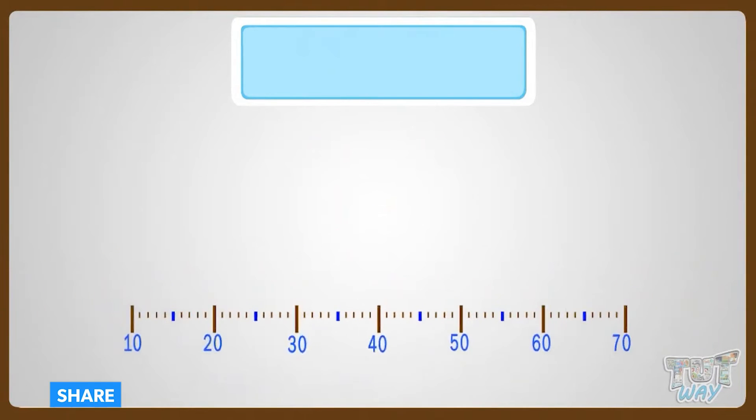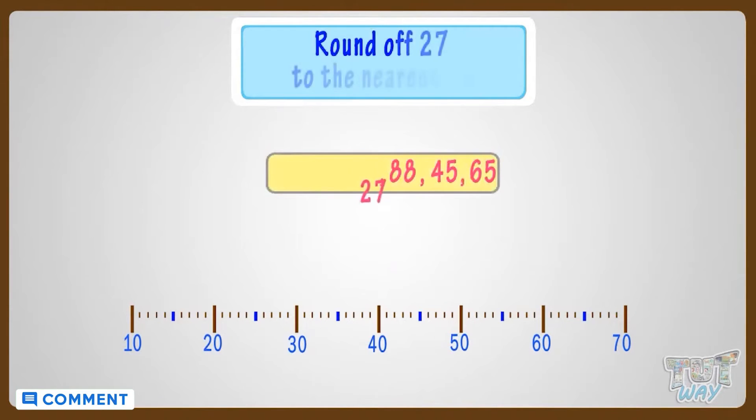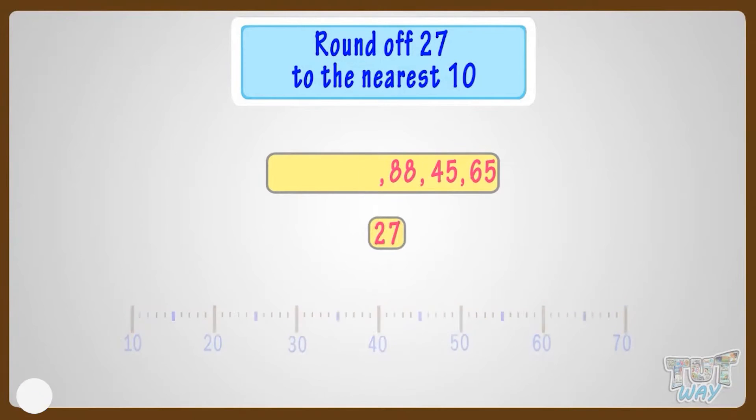Now, let's take another example. Where can you fit 27 on this number line? It is somewhere between 20 and 30.